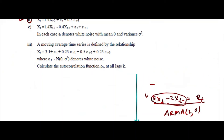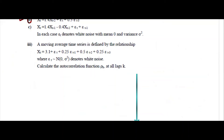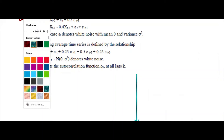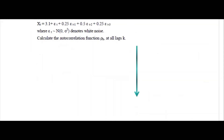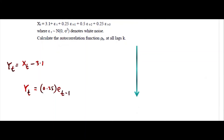For ARMA3, we will not use Yule-Walker equations. You need to write the covariance of Xt and Xt minus 1. Yt is another series equal to Xt minus 3.1. So Yt equals Et plus 0.25 Et minus 1 plus 0.5 Et minus 2 plus 0.25 Et minus 3. There is no Y dependency, so nothing else changes — only the constant is absent.